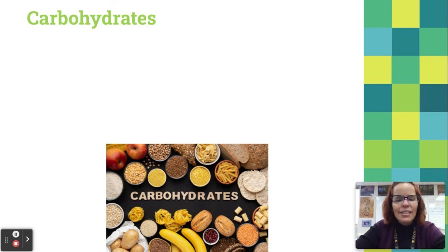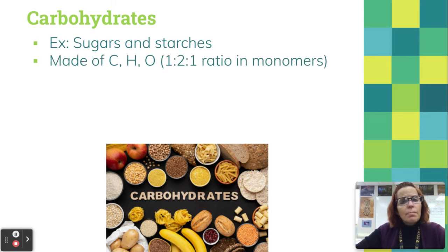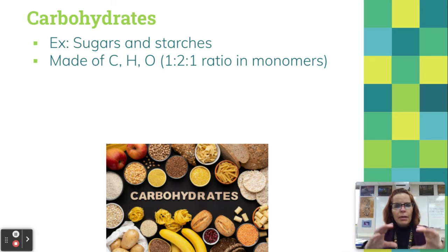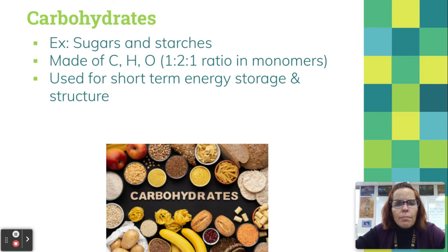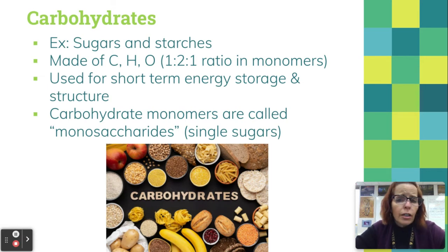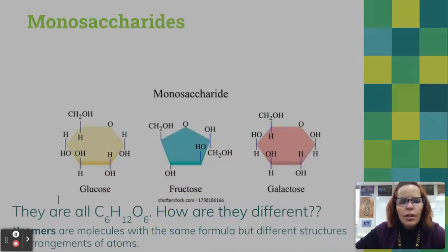Finally, let's jump into carbohydrates. Carbohydrates are the sugars and the starches. They are made of just three elements — carbon, hydrogen, and oxygen — no nitrogen, phosphorus, or sulfur. That's where the name carbohydrate comes from. The monomers always have carbon, hydrogen, and oxygen in a 1:2:1 ratio. Carbohydrates are used for short-term energy storage and structure. Carbohydrate monomers are called monosaccharides — saccharide means sugar and mono means one — so they are the simple sugars.